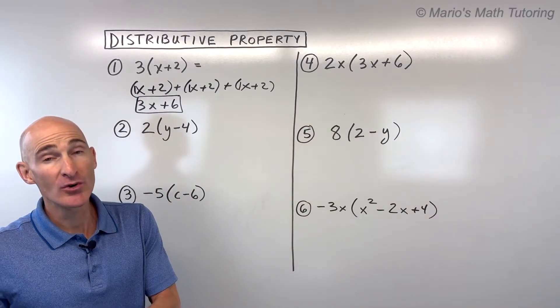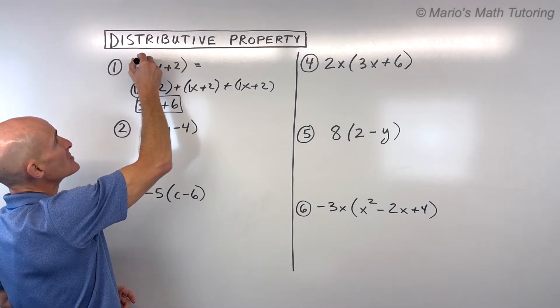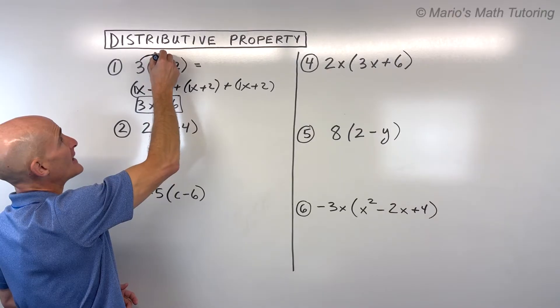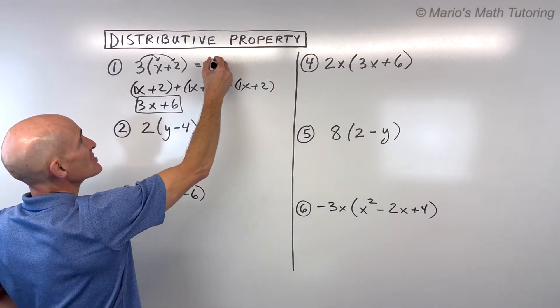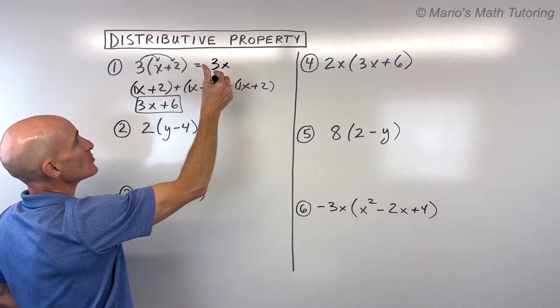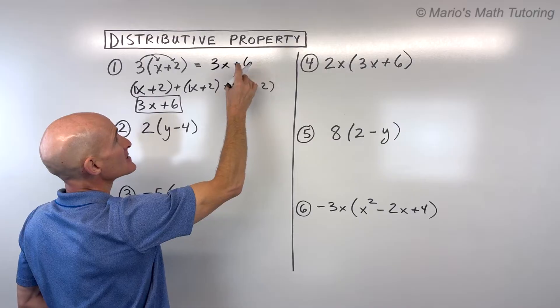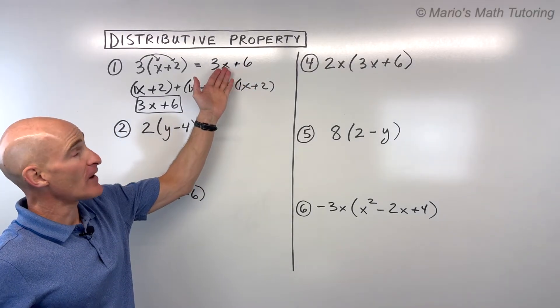The shortcut is whatever's in front here, next to the parentheses, you're going to distribute or multiply into the parentheses. So we have three times x, which is 3x. Three times positive two is positive six. Now, if it's a positive, we write plus. If it's a negative, we write minus. And that's your final result. So it's kind of a nice, quick way of doing it.